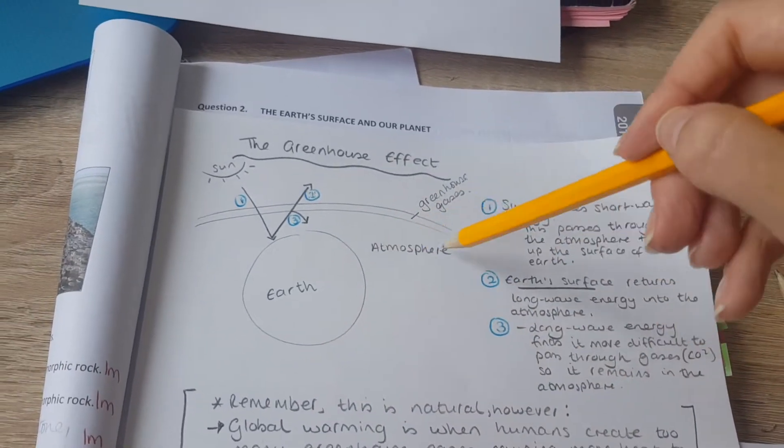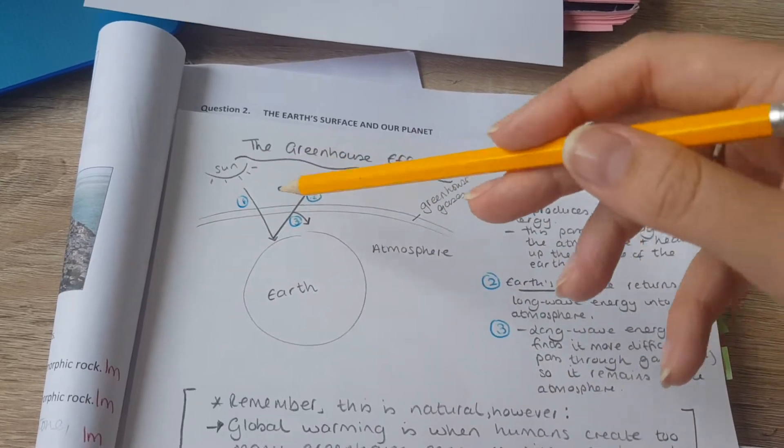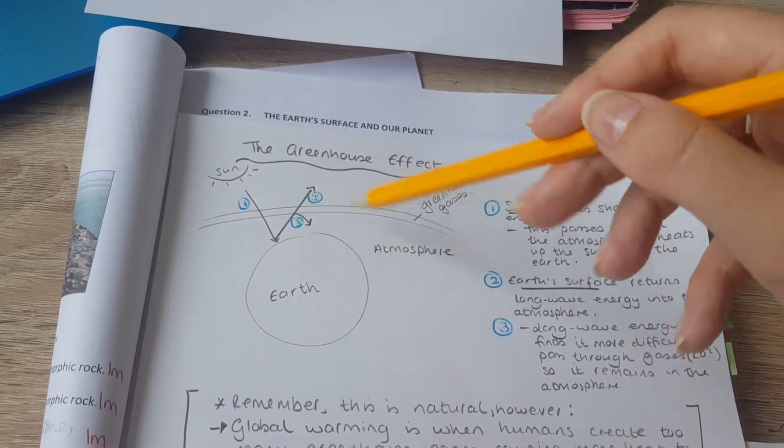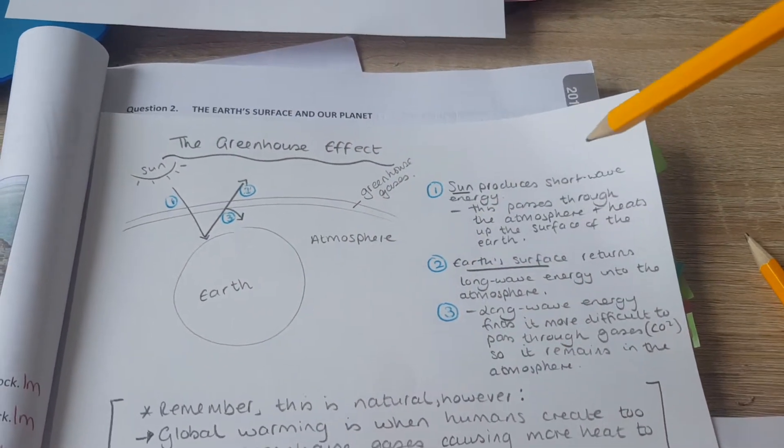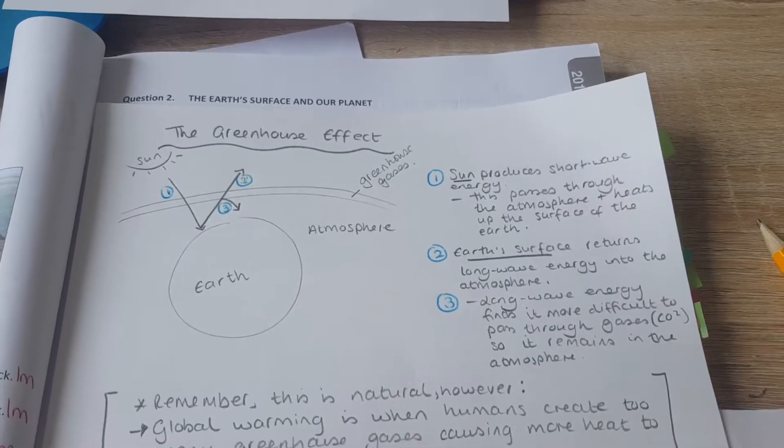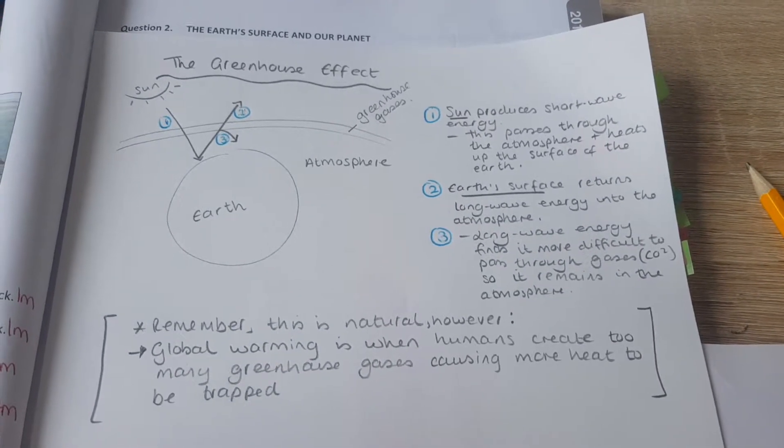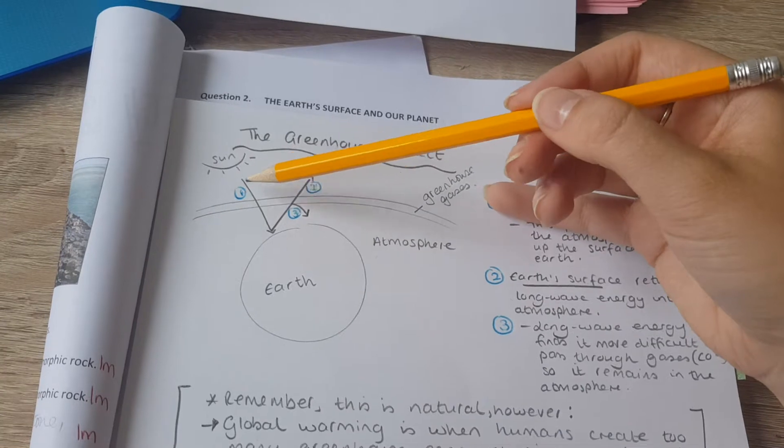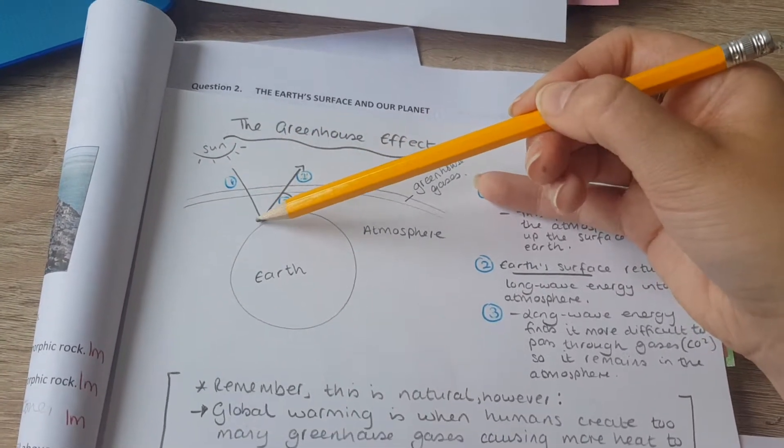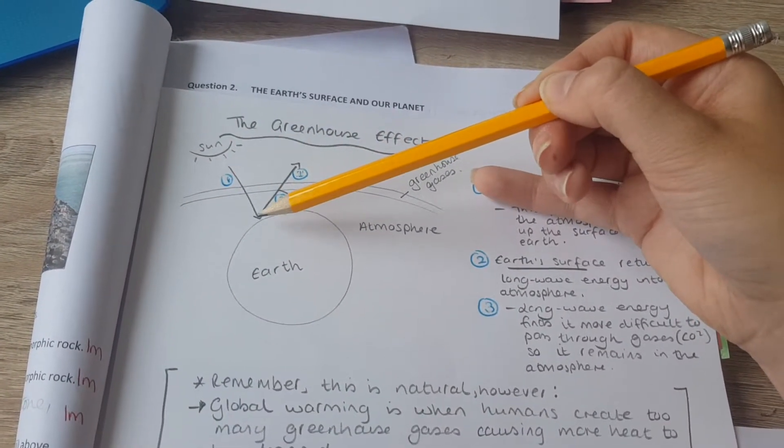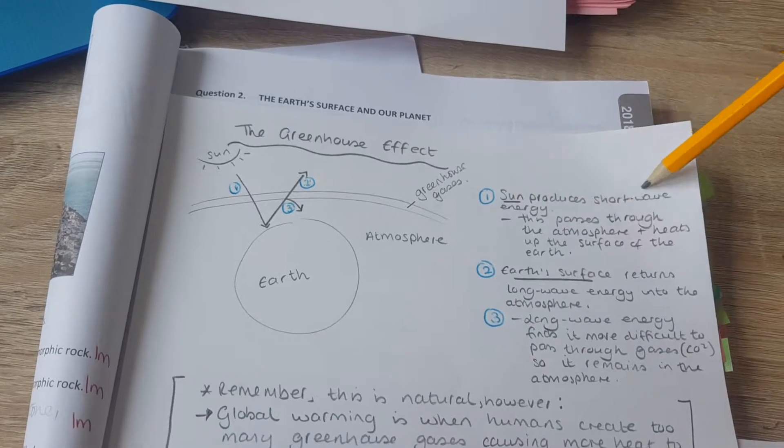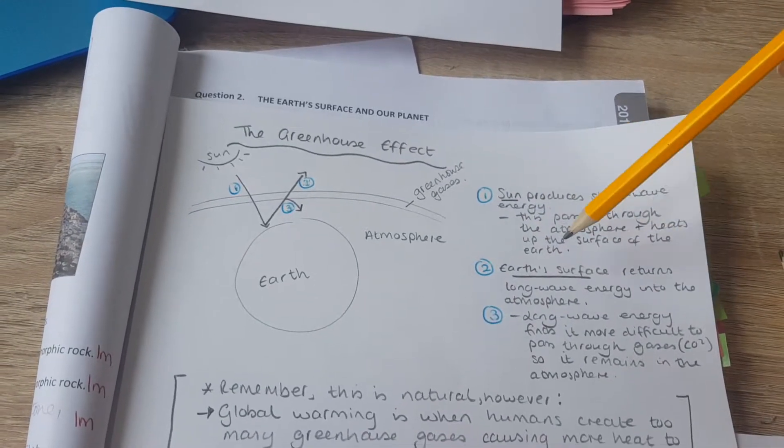We have the Earth, the atmosphere of greenhouse gas, the Sun and its rays coming in, hitting the Earth, bouncing off the Earth and kind of staying. The Sun produces shortwave energy. This passes through the atmosphere and heats the surface of the Earth. That's how we heat up. That's my statement here, this is my development.